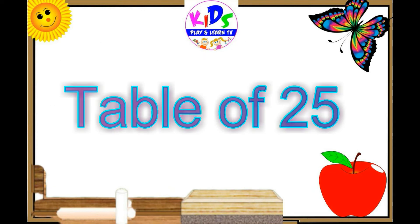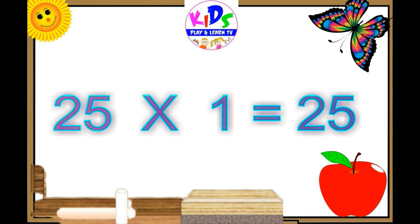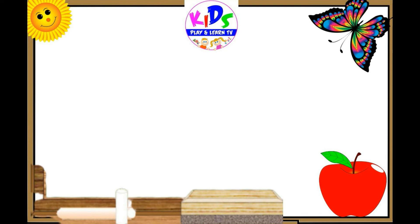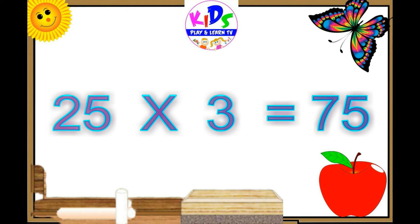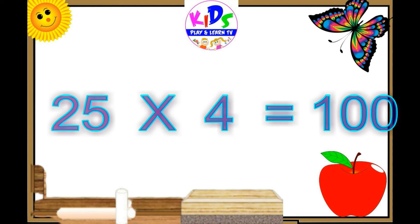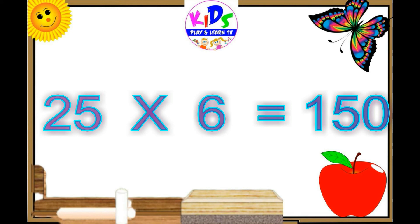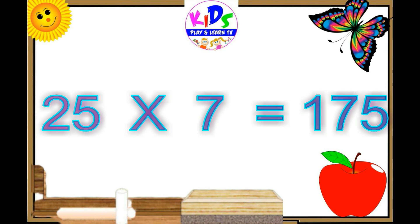Hello everyone, today we are going to learn table of 25. 25 1s are 25, 25 2s are 50, 25 3s are 75, 25 4s are 100, 25 5s are 125, 25 6s are 150.